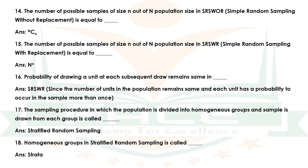Question 14 — The number of possible samples of size n out of a population of size N in SRSWOR (simple random sampling without replacement) is equal to N choose n, i.e., the combination formula C(N, n).